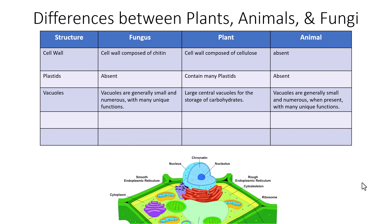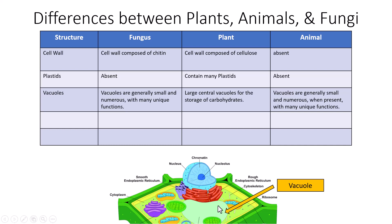Vacuoles are found in all eukaryotic cells, but there are key differences in their types and sizes. Fungi contain vacuoles that are generally small and numerous with many unique functions. Plants have a large central vacuole for storage of carbohydrates and water, which builds turgor pressure as the vacuole pushes out on the cell membrane and cell wall. In animals, vacuoles are generally small and numerous with many unique functions as well.